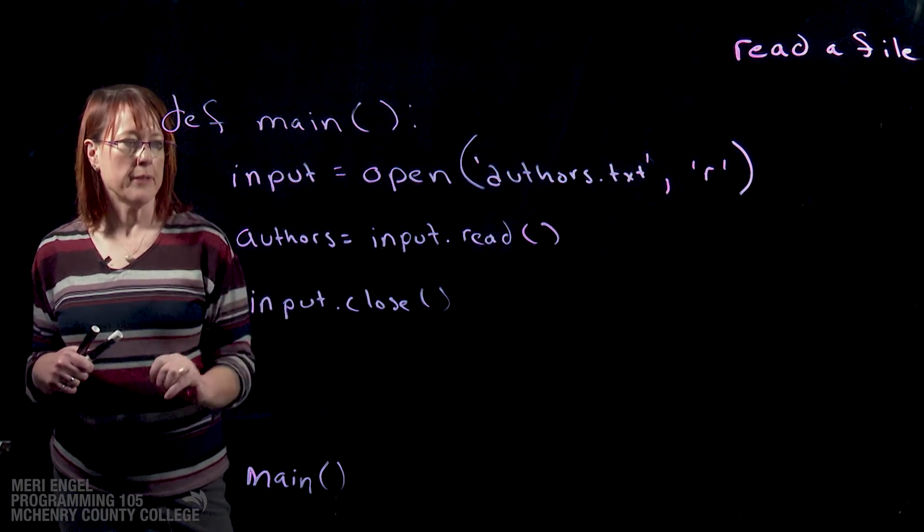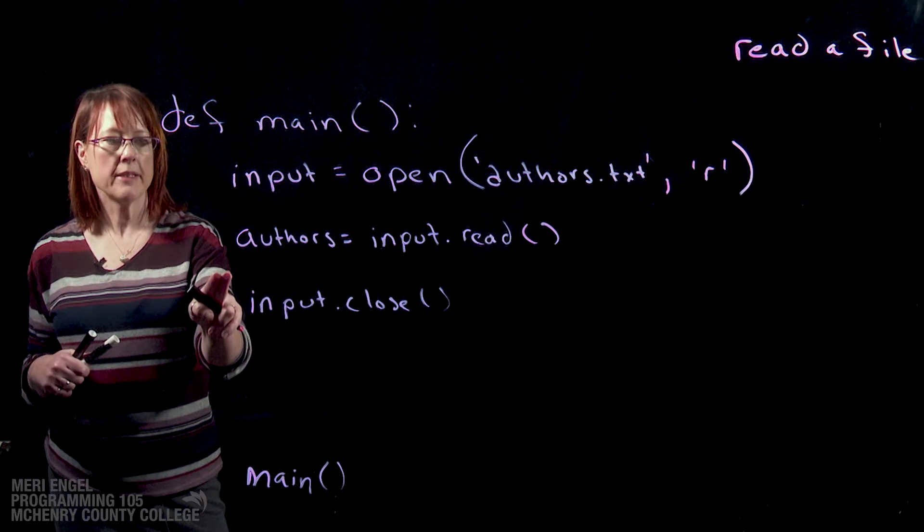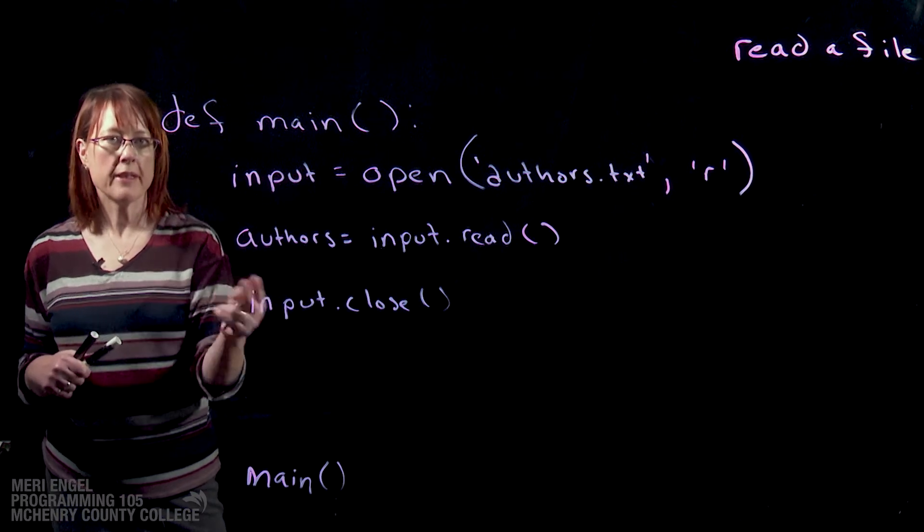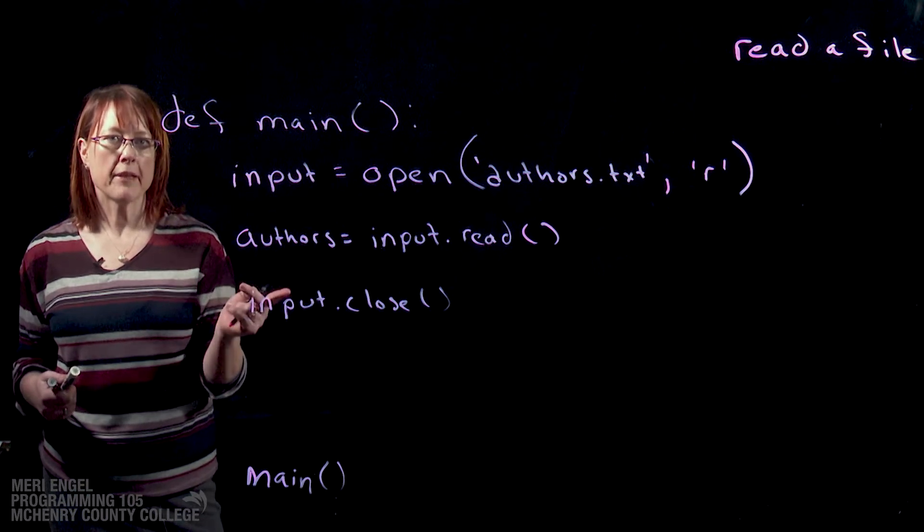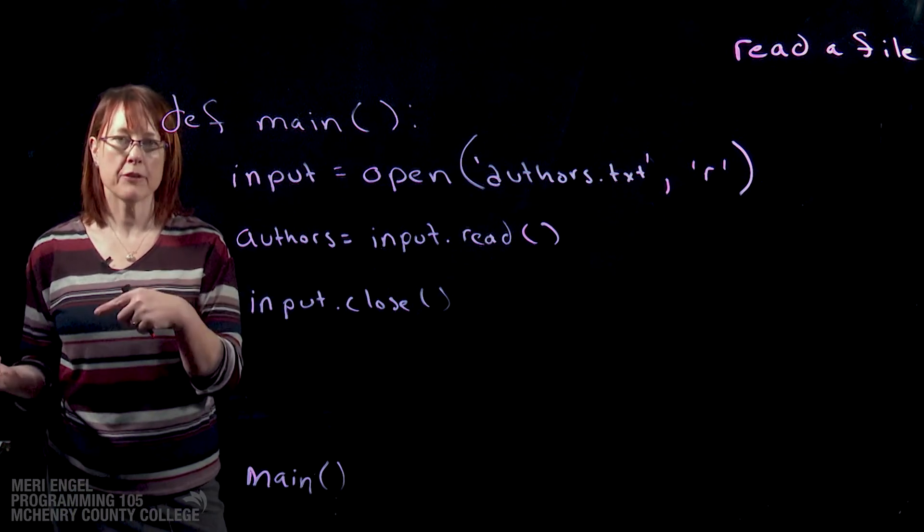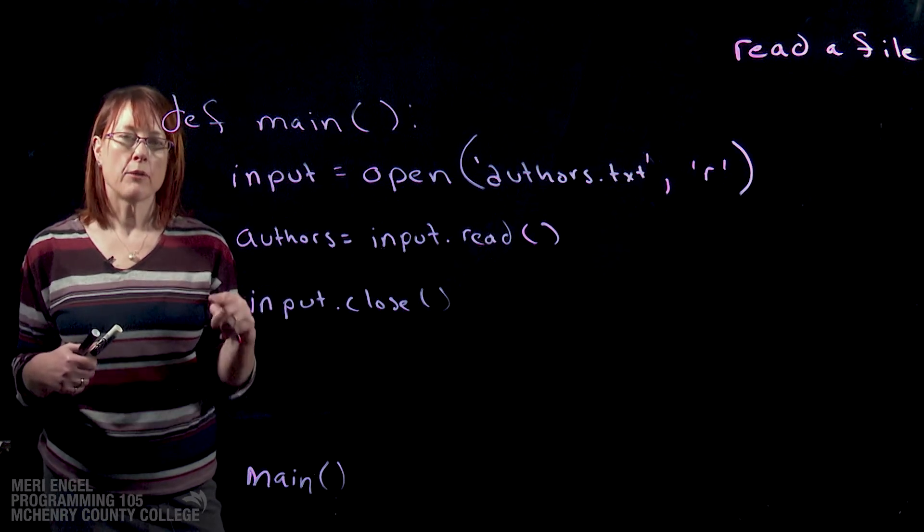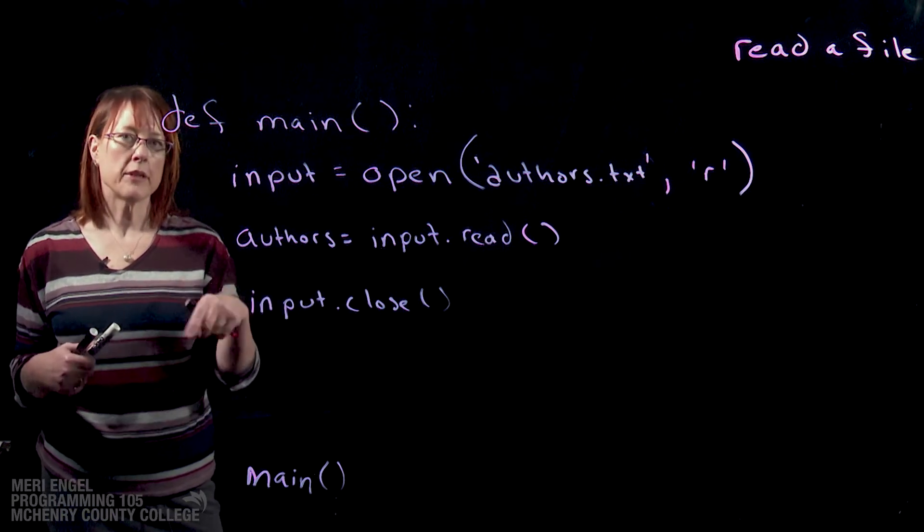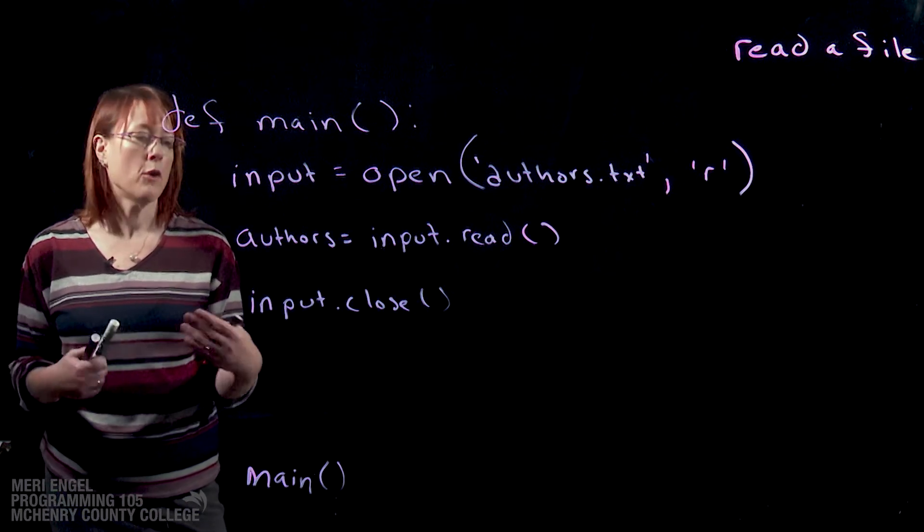And then we do input.close. If we were to add a line here where we printed authors, it would print the entire contents of the file, one after each other. Because if you're thinking of the last one we did where we were writing to it, we ended each line with a newline symbol. So each one would print on a new line, and whatever authors were put in there would be there.